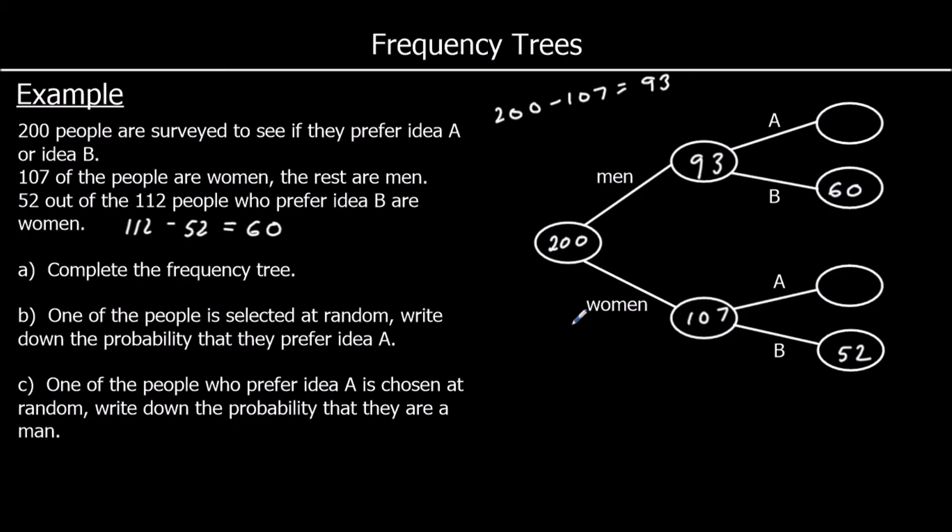So now we can find the missing numbers. 93 take away 60 is 33. And 107 take away 52 is 55. So there is our completed frequency tree. That's part A.